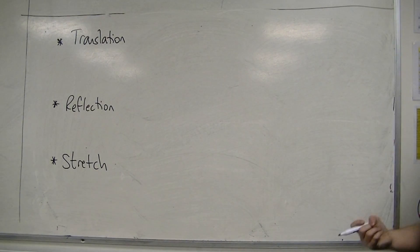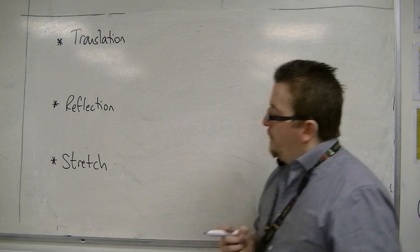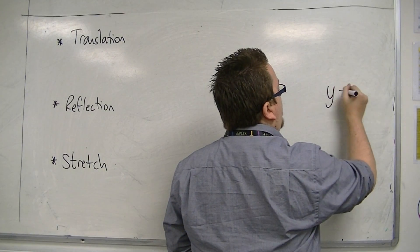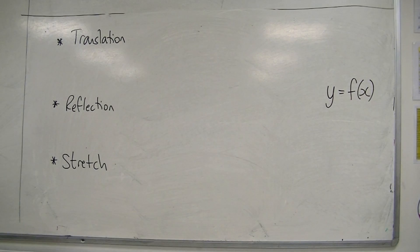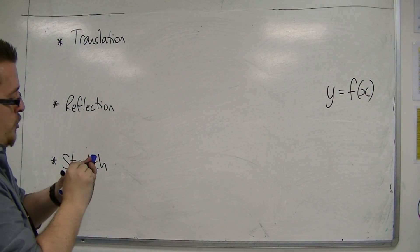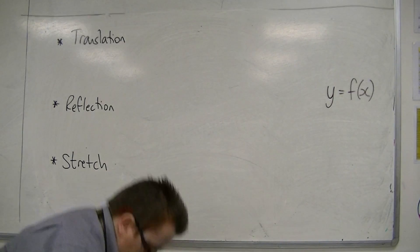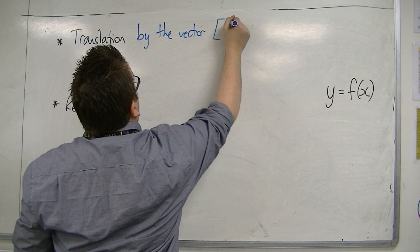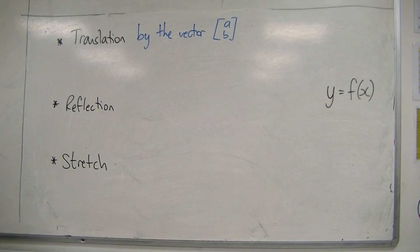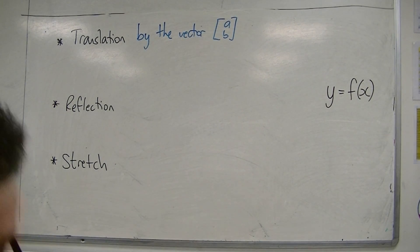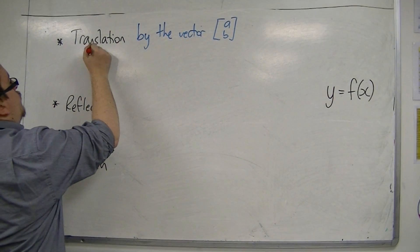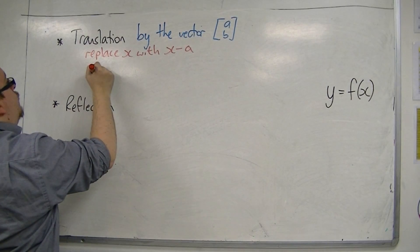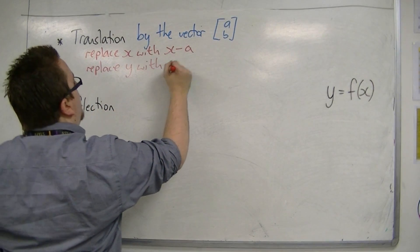So translation, reflection, and stretch. If we start off in all three cases with y equals f of x, then if we perform a translation by the vector [a, b], what you must remember to do is replace x with x minus a and replace y with y minus b.